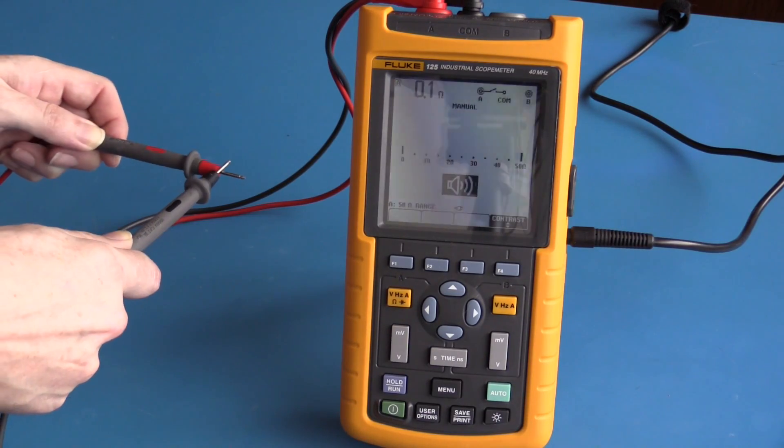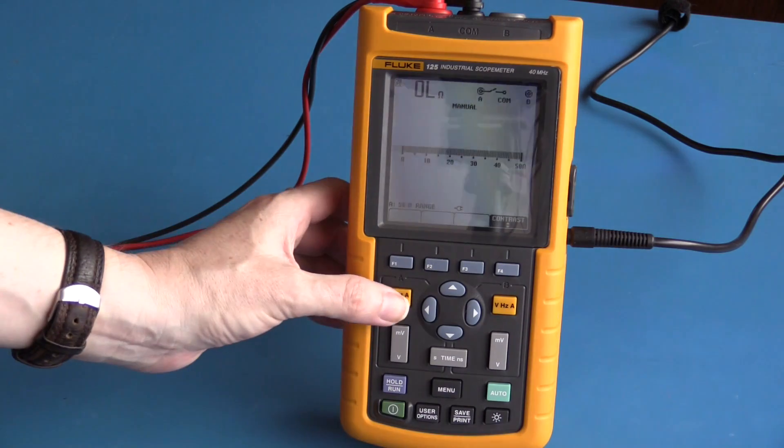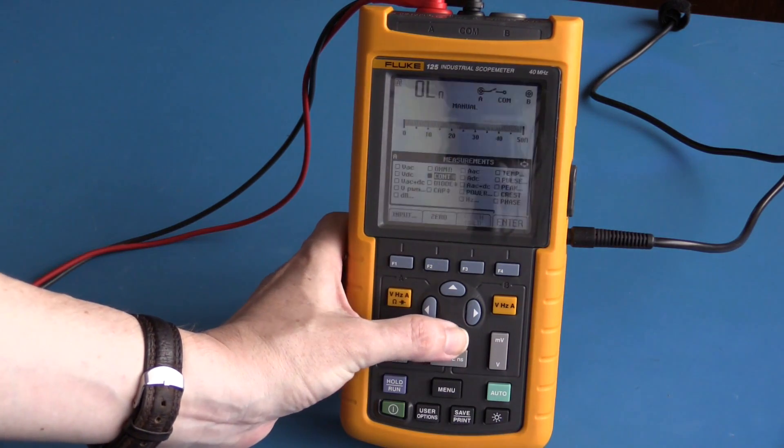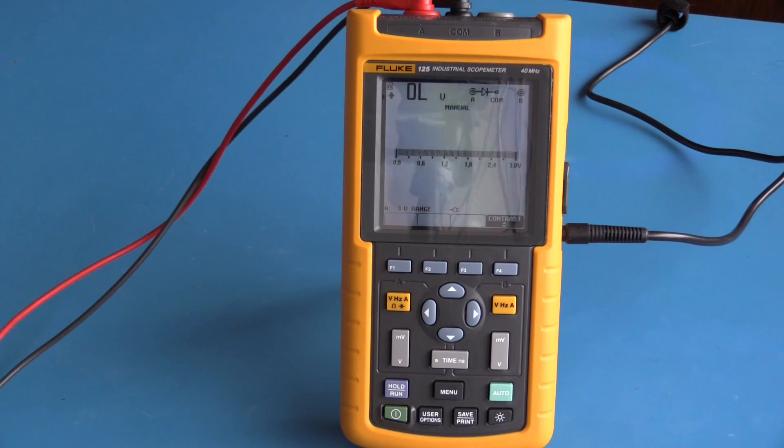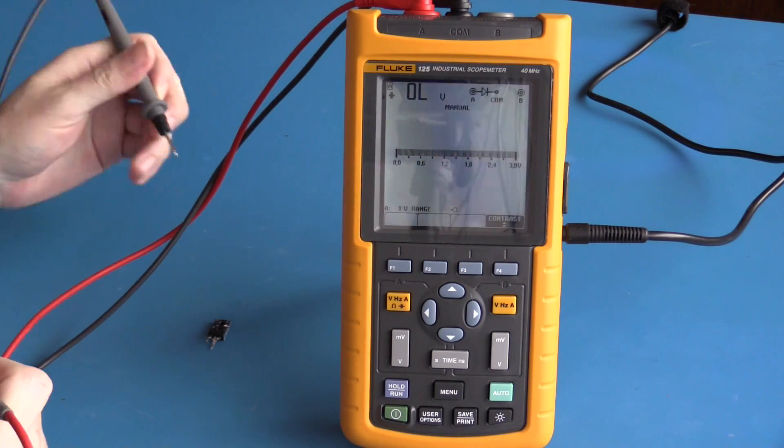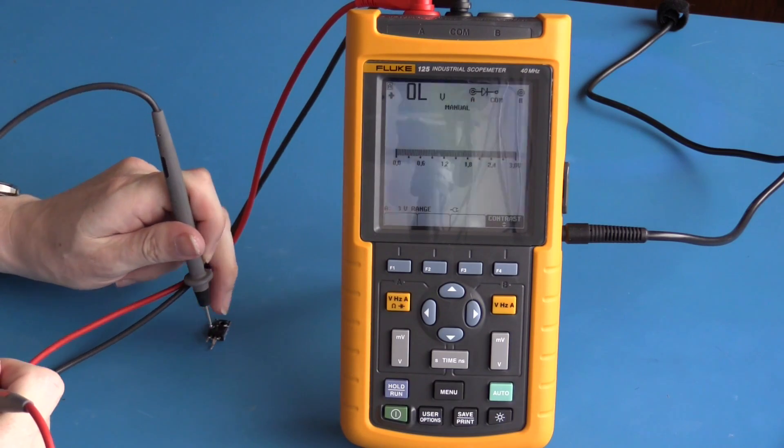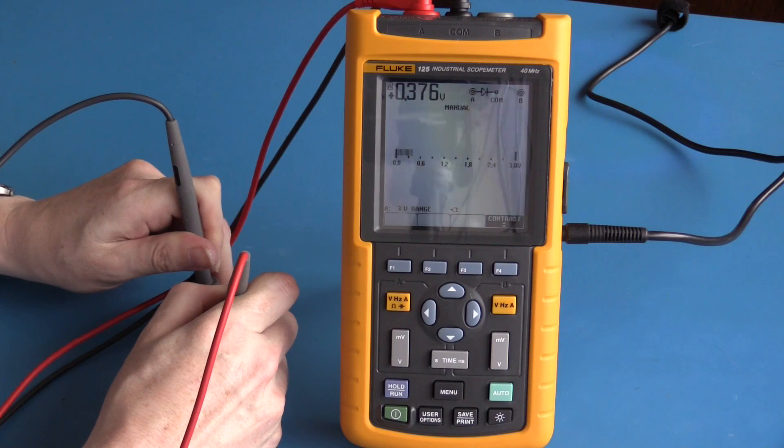To select continuity, this is open, this is closed, nice loud beep. To test a diode, this is a diode in a TO-220 package. The black lead goes on the cathode which is the center pin, the red lead goes on the anode which is on either of the outside pins.